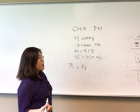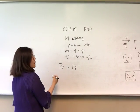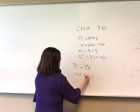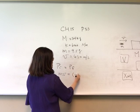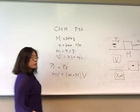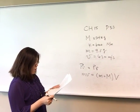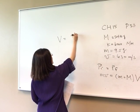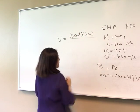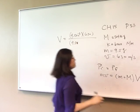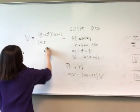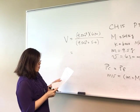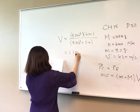Solving for V: V equals m times v_bullet divided by (m + M). With m equal to 9.5 times 10 to the negative 3, velocity 630, divided by the sum of masses, after calculation the velocity after collision is 1.106 meters per second.